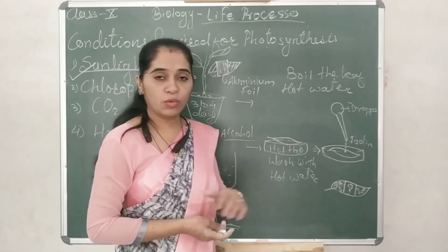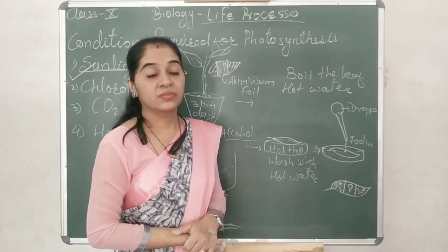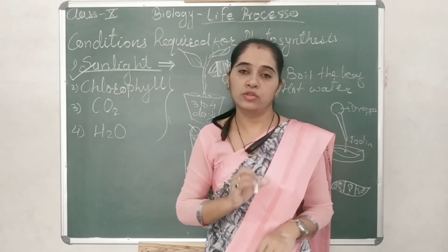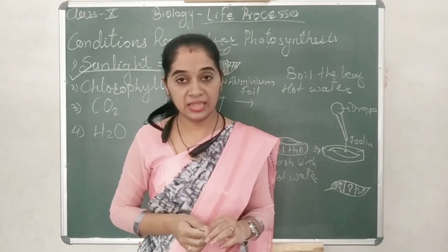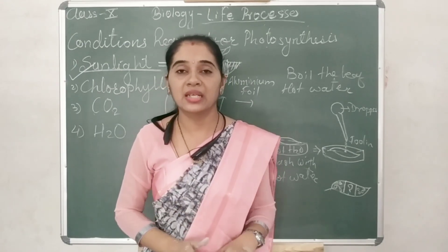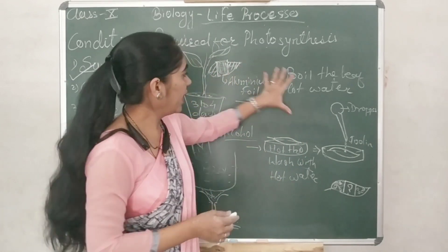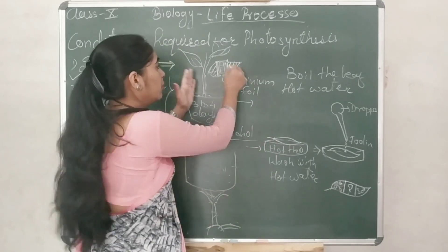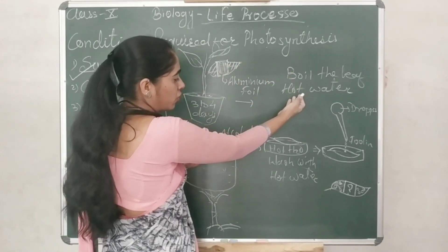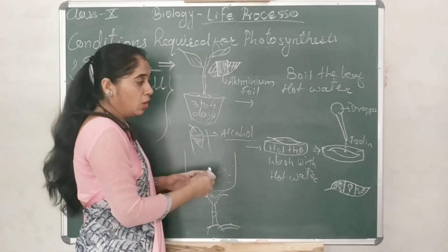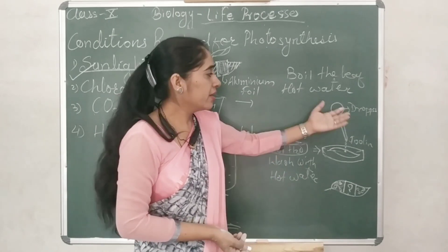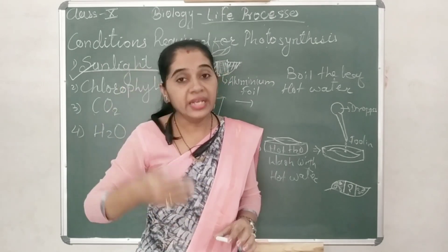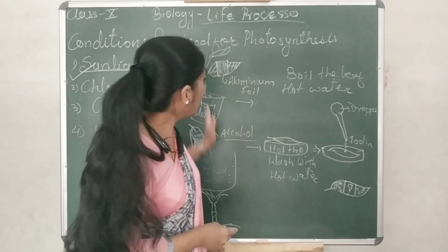What does this whole experiment mean? It means that sunlight is extremely essential for the process of photosynthesis. If there is no sunlight, photosynthesis will not happen. That means starch molecules will not be prepared, glucose will not be produced. Are you getting what was the aim of this experiment? And we have done it. Now there are three more experiments: one for chlorophyll, for carbon dioxide, and for water also. These three experiments we will see in the next session.